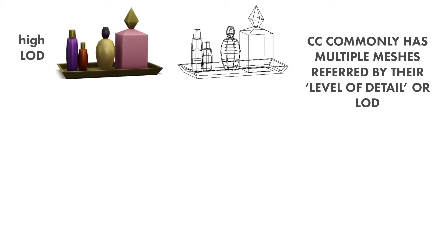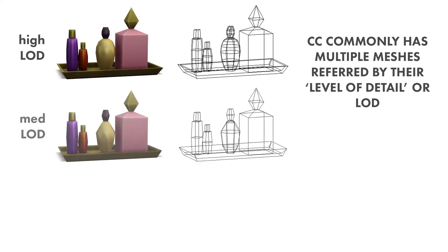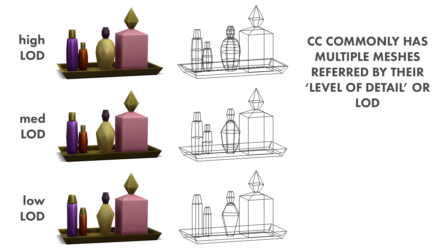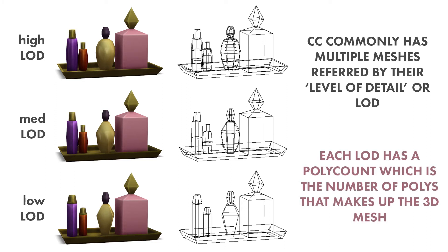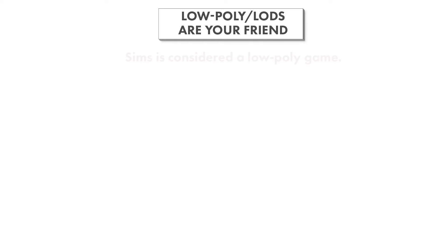This next concept applies specifically to making a mesh for a game like the Sims. In most cases, CC has multiple meshes referred to by their level of detail, or LOD. There is the high LOD, which is the most detailed mesh, then the medium and low LOD meshes, which have decreasing levels of detail. Each LOD has a poly count, which is the number of polys that make up the mesh. In the case of the perfume tray, the highest LOD has 310 polys and the lowest has 126 polys. Sims is considered a low-poly game, meaning the meshes that make up the objects in the world tend to have a lower number of polygons.